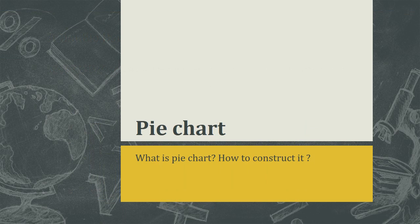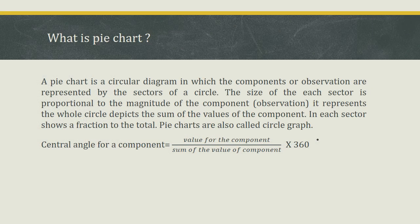The next topic is pie chart. A pie chart is a circular diagram in which the components or observations are represented by the sectors of a circle. The size of each sector is proportional to the magnitude of the component or observation. It represents the whole circle, depicting the sum of the values of all components.